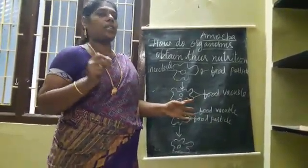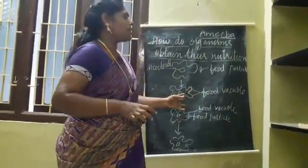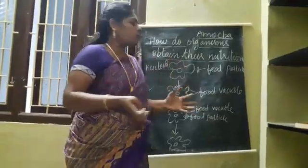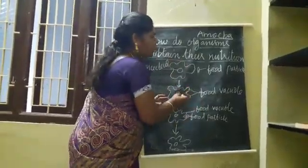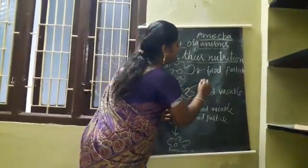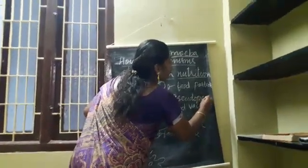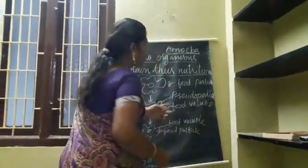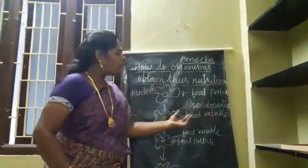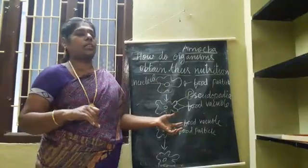Different parts become specialized to different functions in organisms. That means finger-like outgrowths — so many finger-like outgrowths are present on the surface. These are called pseudopodia. Pseudopodia help with locomotion and also with digestion.